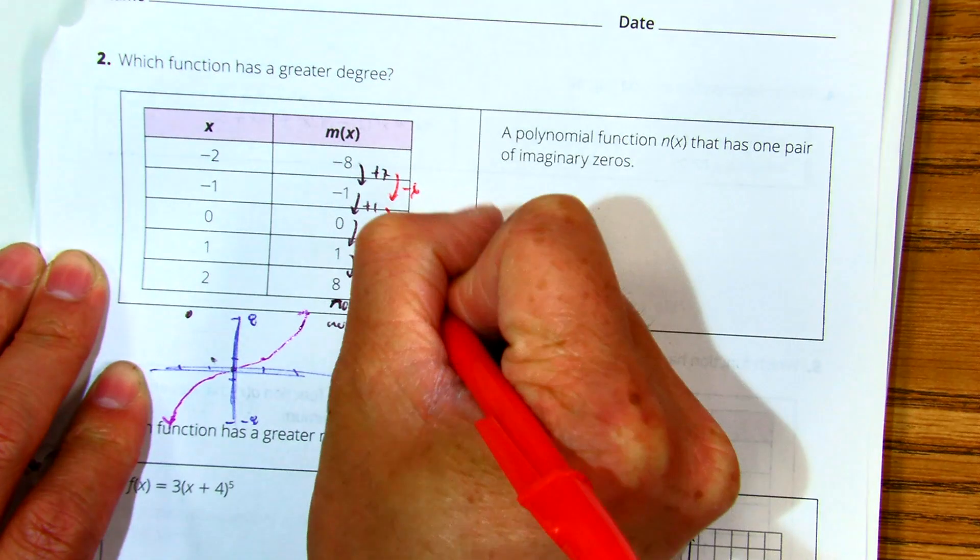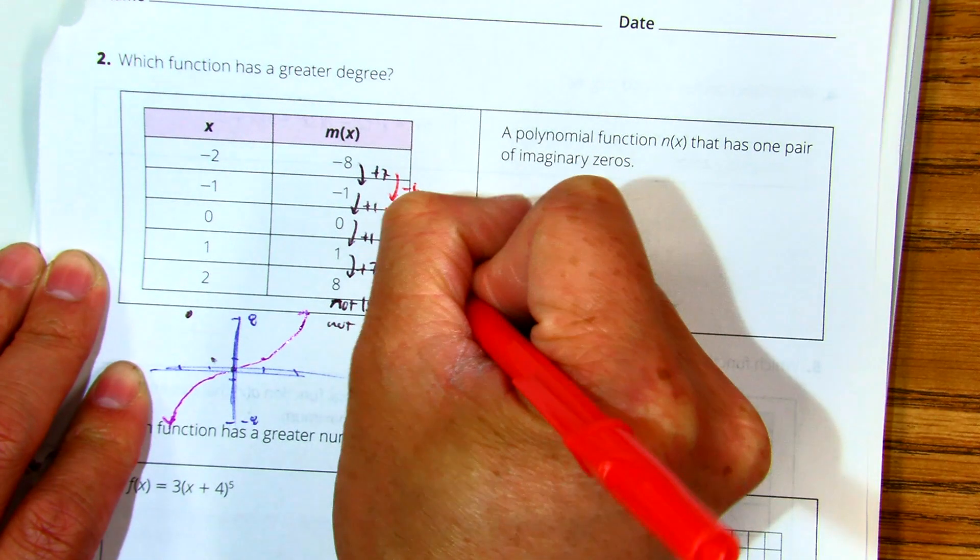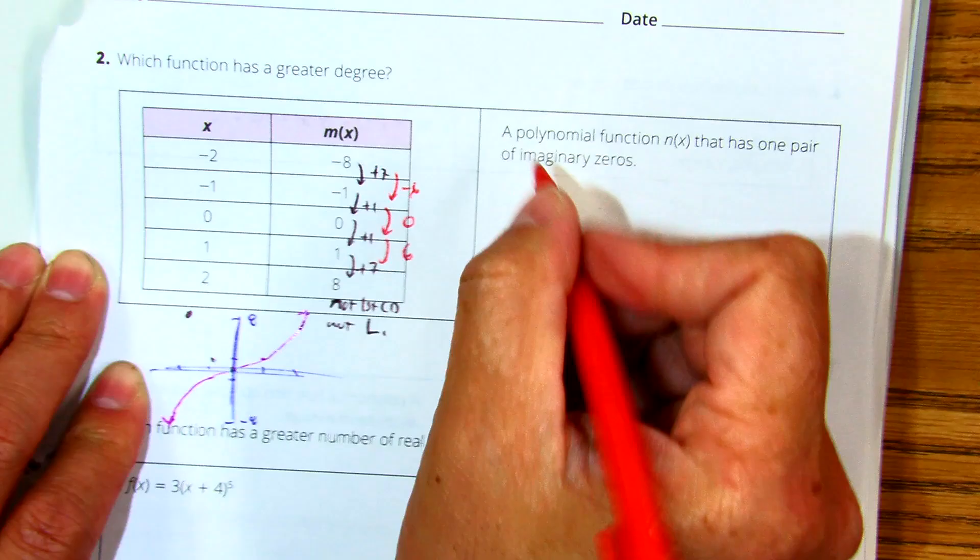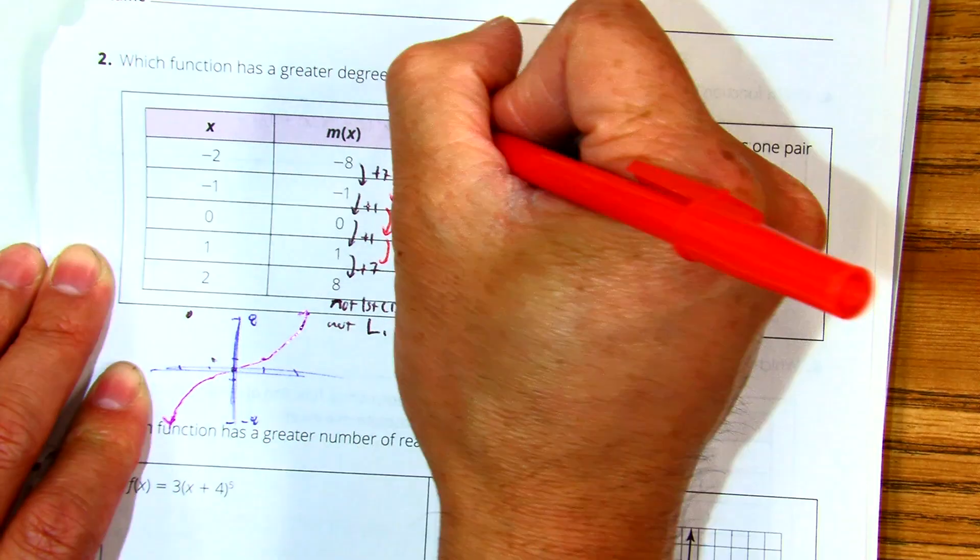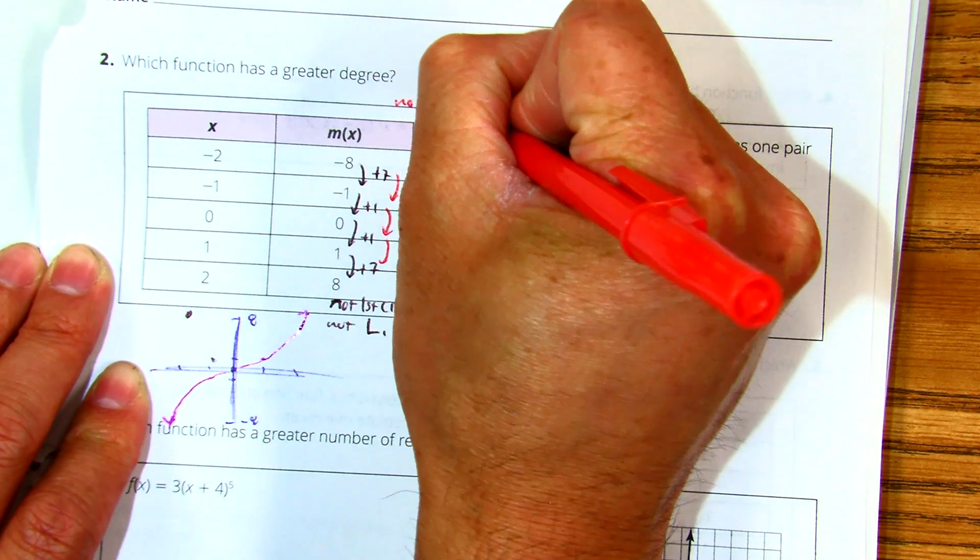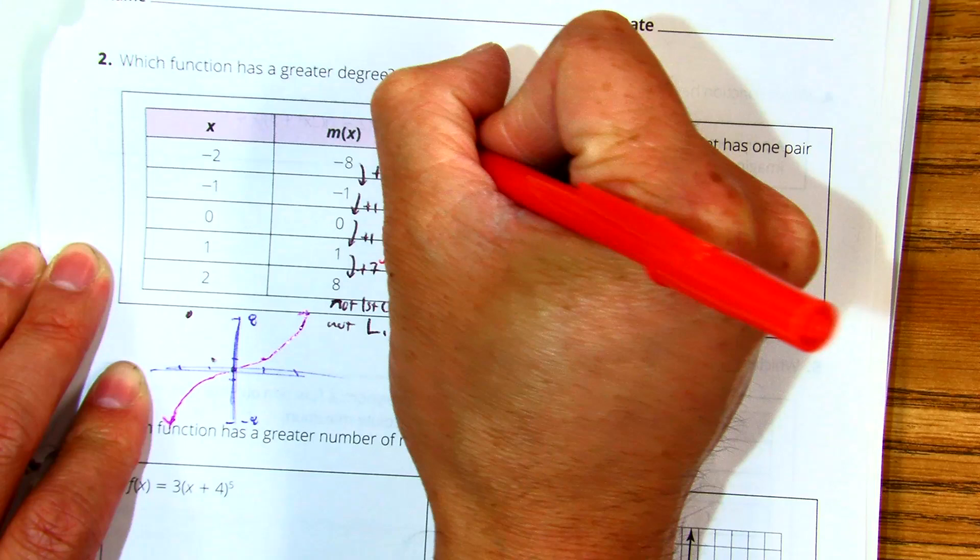Zero. And then one to seven? Six. Do we have a second common difference? No second common difference. So is it quadratic? Not quadratic.